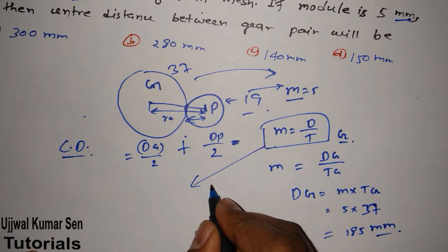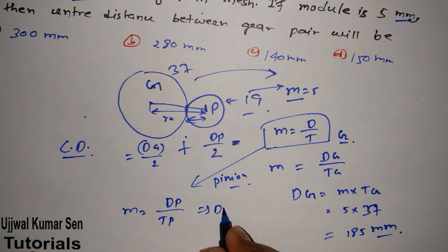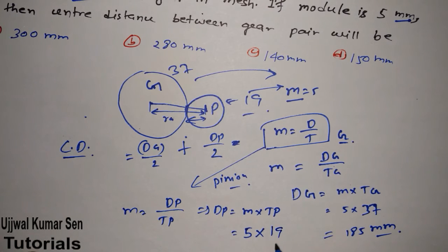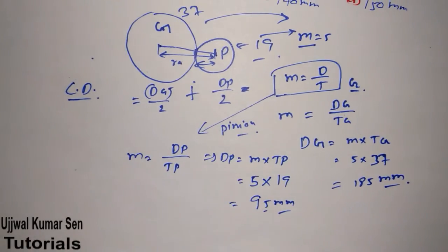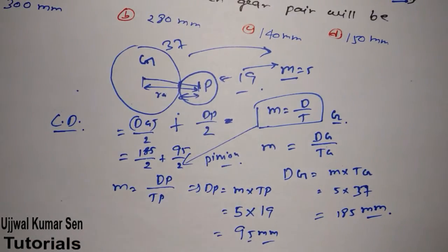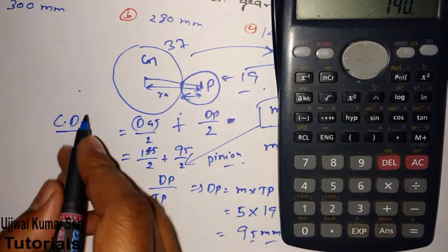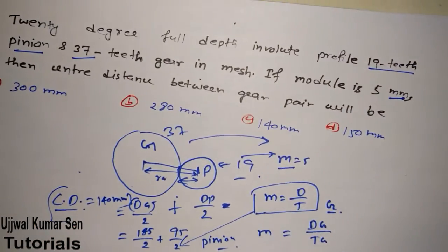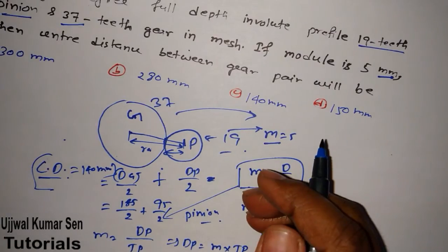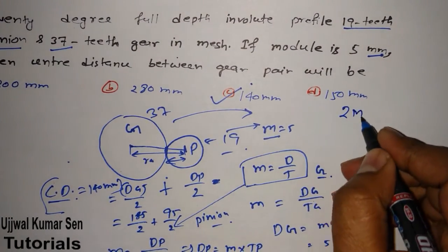Center distance = (D_gear / 2) + (D_pinion / 2) = 185/2 + 95/2 = 92.5 + 47.5 = 140 mm. So CD = 140 mm. Looking at the options, option C is the right answer. This question was asked in GATE for two marks from the module topic.